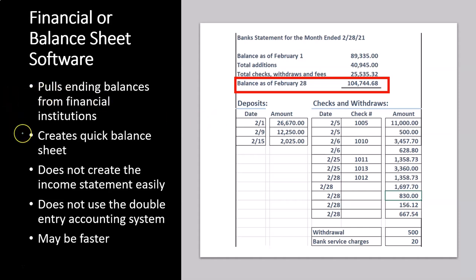It pulls ending balances from the financial institutions and creates a really quick balance sheet from your financial institutions, which is great. It does not create the income statement easily — that's the problem. It does not use the double-entry accounting system. So when you're trying to check whether you've made errors, or whether someone stole your money, or trying to reconcile your bank account, it doesn't do that well because it's just pulling in the ending balances. You're not really looking at the activity.